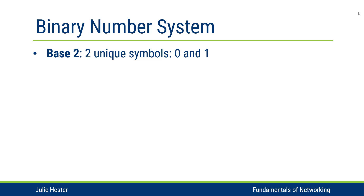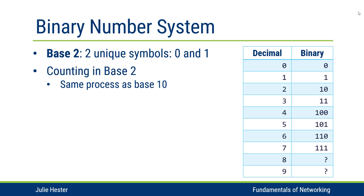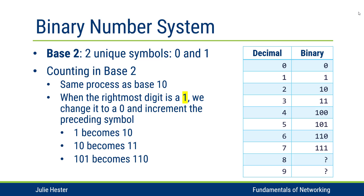So we're going to be adding new place values quickly. To count in base two, it works the same way as base 10. When the rightmost digit is a one, we change it to a zero and increment the preceding value, so that a one becomes one zero, one zero becomes one one, and one zero one becomes one one zero. I've written out the first 10 decimal values on the right and their binary equivalents so you can see that pattern, where we change the zero to a one each time, and then if necessary we'll add another place value.